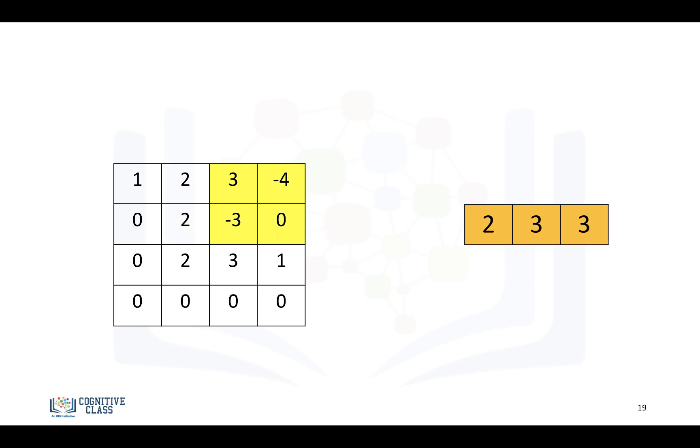Then we shift over. We select the maximum value. In this case, it's also 3. And we repeat the process, almost identical for convolution.